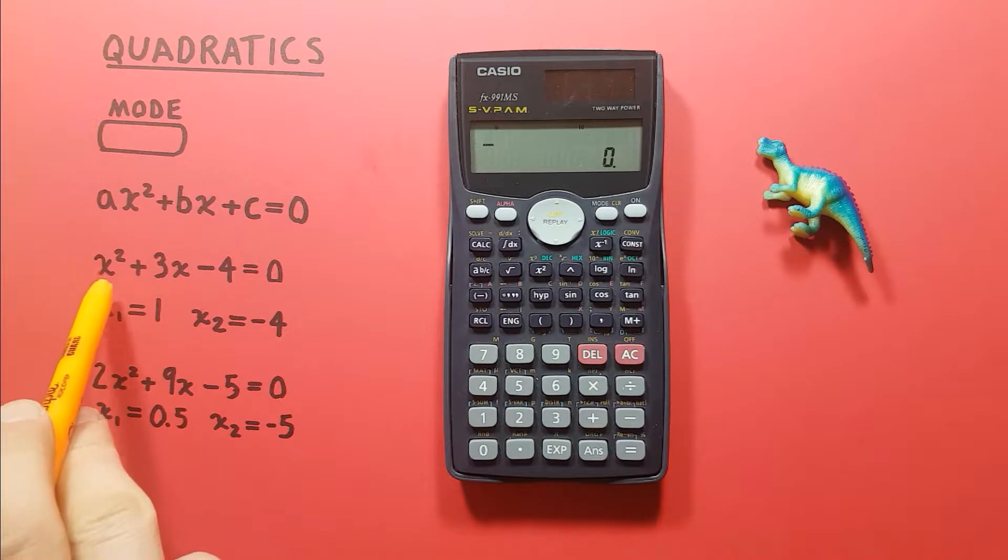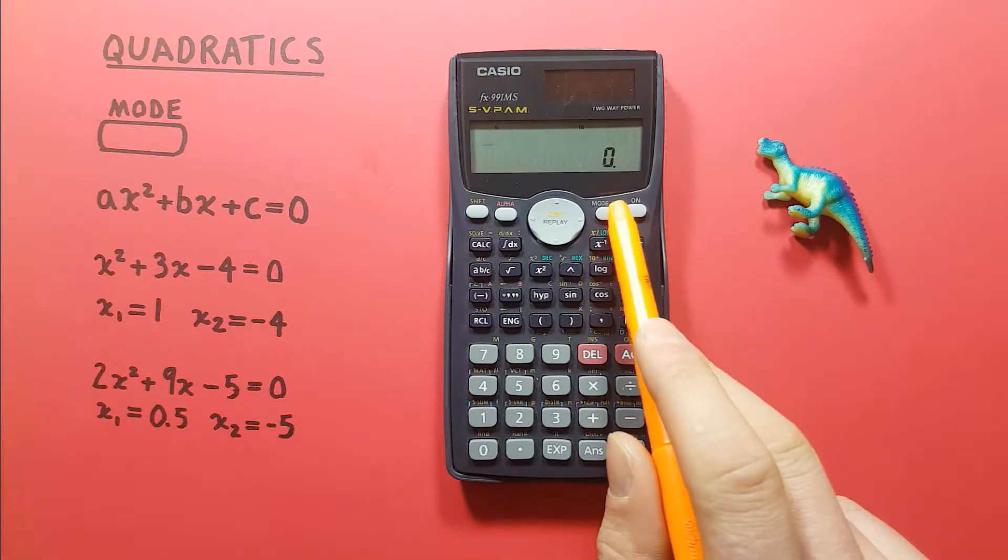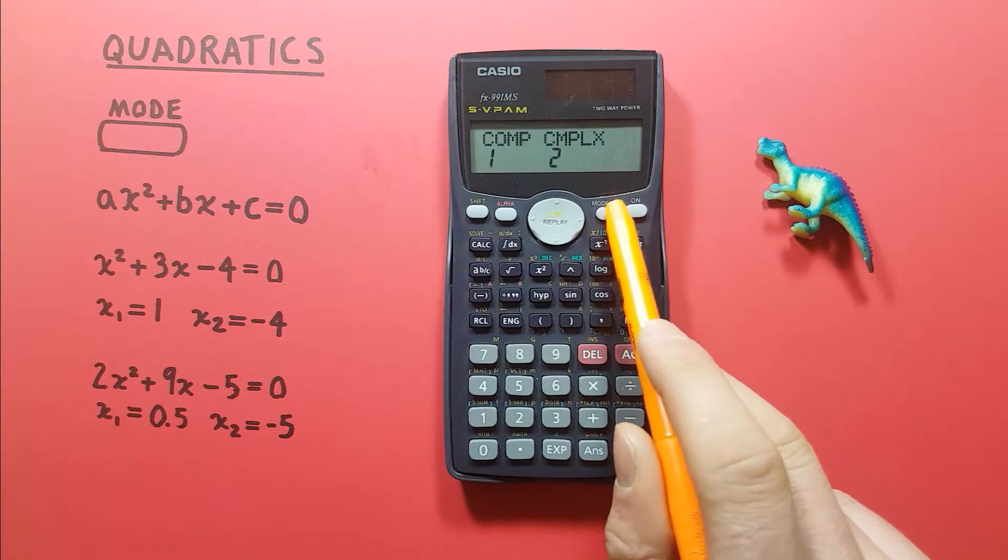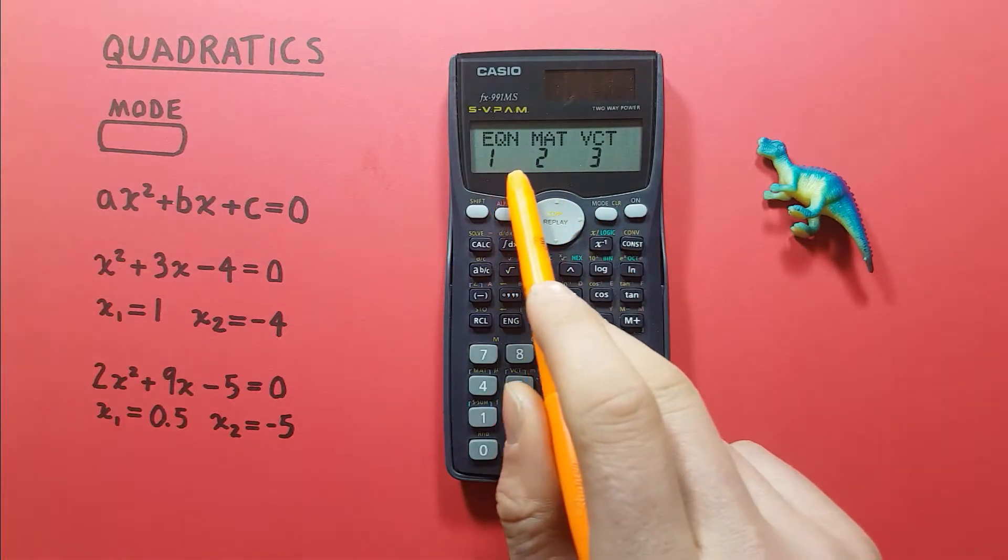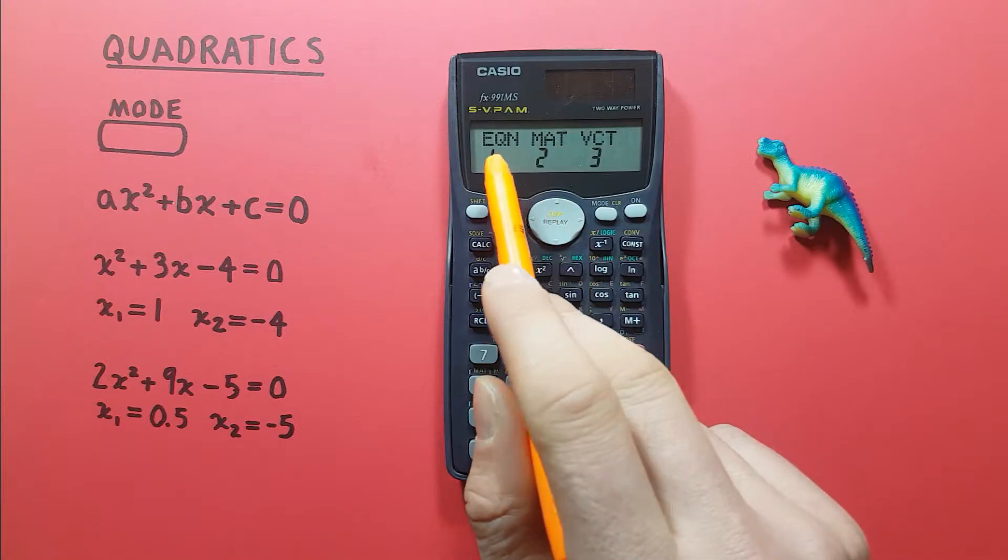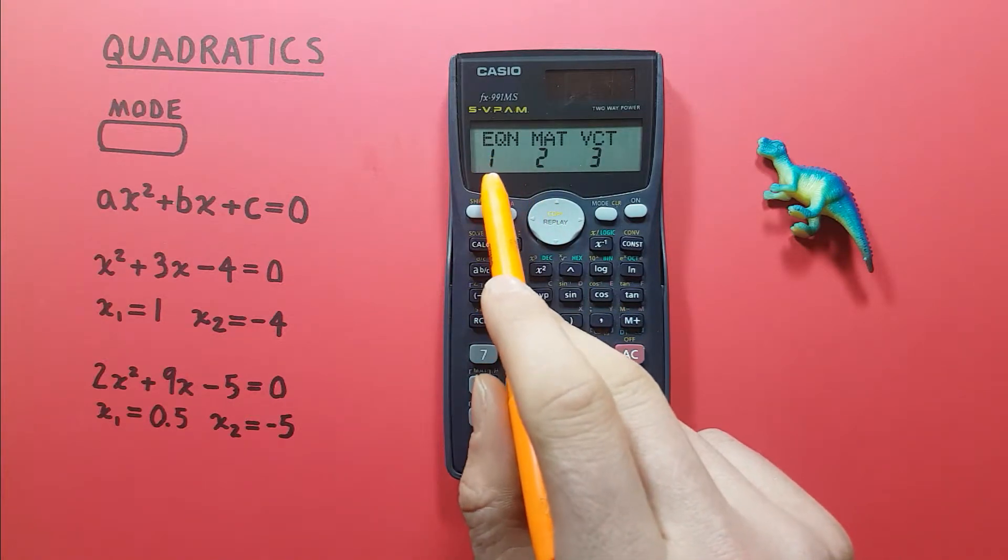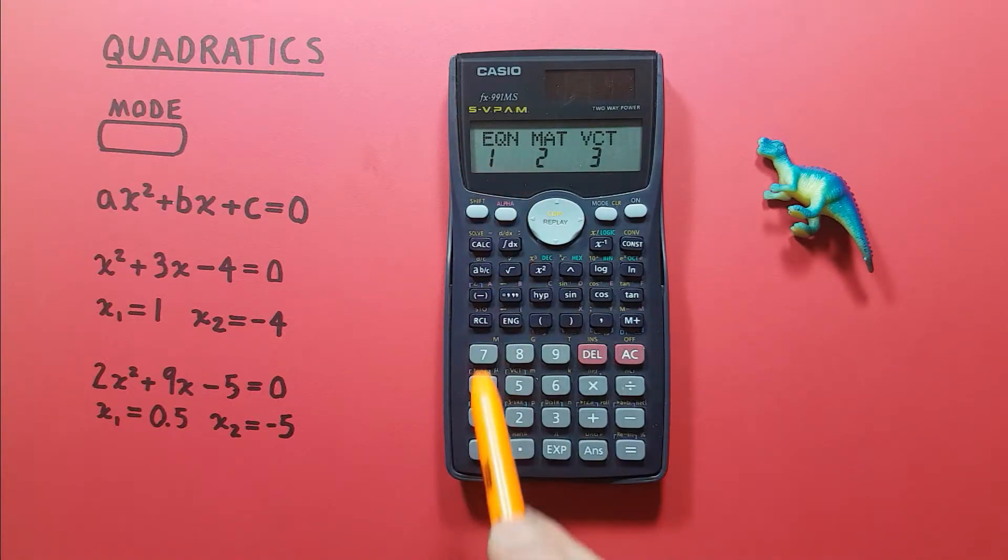Alright, so if we wanted to solve this, to start we would press the mode key on our calculator three times—one, two, three—until we get to this menu. And then the option that we want is the equation or EQN, so we press one.